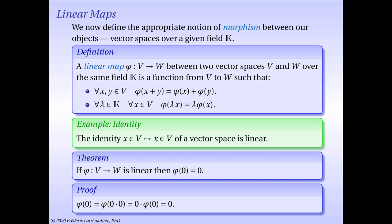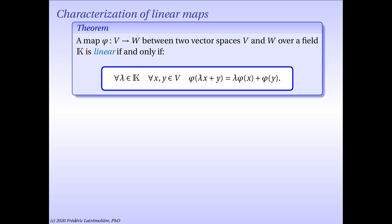We showed that in a vector space, zero times any vector is always a zero vector. So in particular, zero times a zero vector is a zero vector. Applying phi to this observation, we get that phi of zero equals phi of zero times zero. But by the second property in the definition of a linear map, this in turn equals zero times phi of zero. And again, since W is a vector space, zero times any vector is a zero vector. This concludes this little proof.